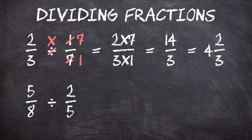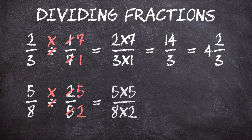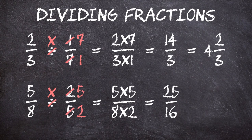Two-thirds divided by one-seventh equals four and two-thirds. For the second problem, five-eighths divided by two-fifths, you first need to find the reciprocal of two-fifths — so five over two — and change the divide sign to a multiply. Multiply top by top and bottom by bottom: five times five over eight times two gives us twenty-five over sixteen. Changing that to a mixed fraction, we get one and nine-sixteenths. Five-eighths divided by two-fifths equals one and nine-sixteenths.